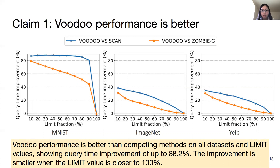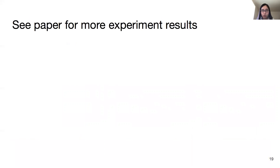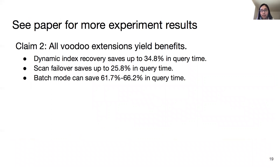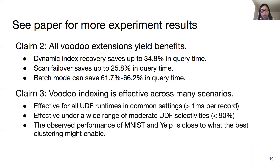Experiments also show that the three Voodoo extensions — dynamic index recovery, scan fill-over, and batch mode — can save query runtime. In addition, Voodoo is effective for reasonable UDF runtimes and selectivities. Although the clustering is not perfect, the observed performance on Amnesty and Yelp is close to what the best clustering might enable. More experiment details can be found in the paper.